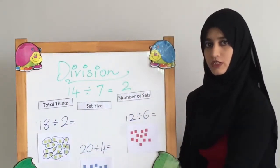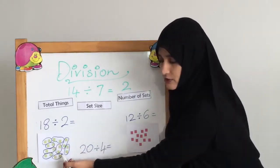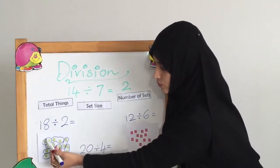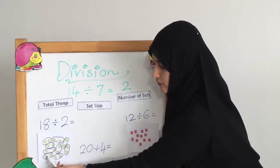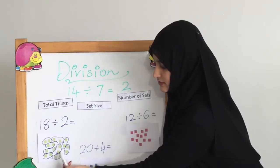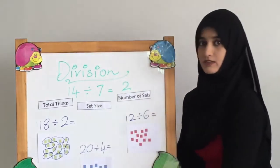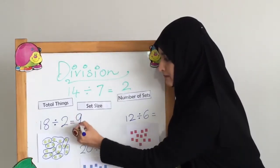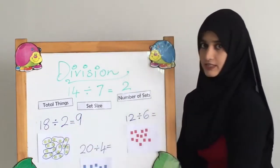When you have finished making all the sets, to find the answer, you have to count how many sets you have made: 1, 2, 3, 4, 5, 6, 7, 8, 9. The answer is 9. 18 divided by 2 equals 9.